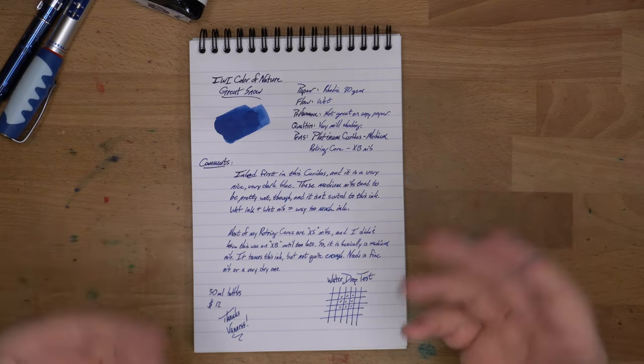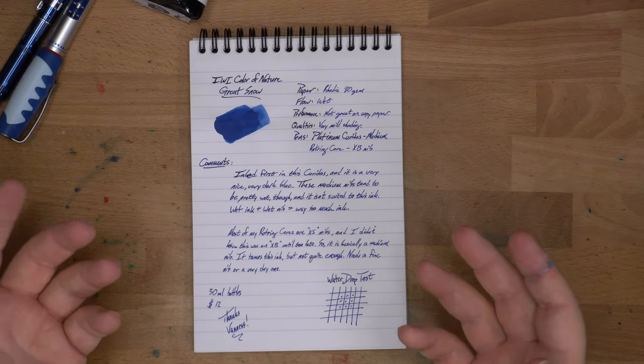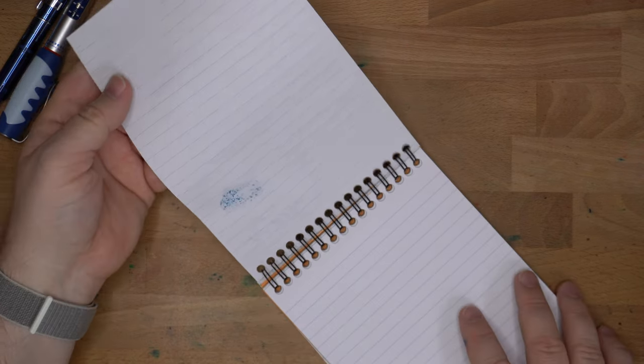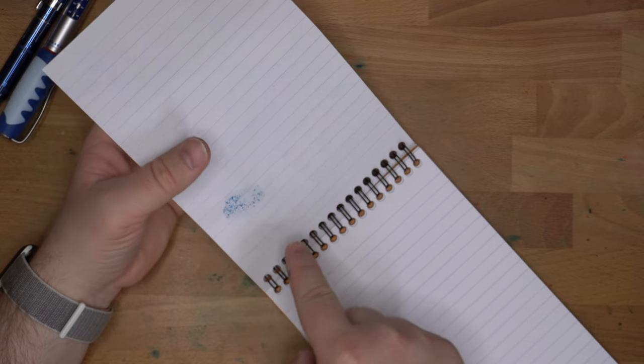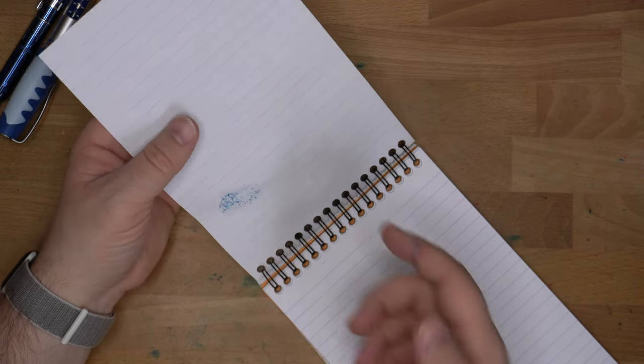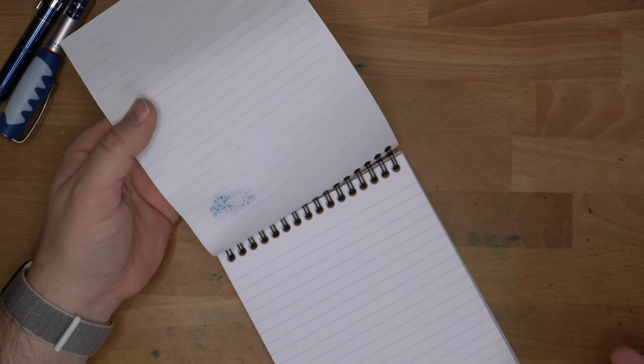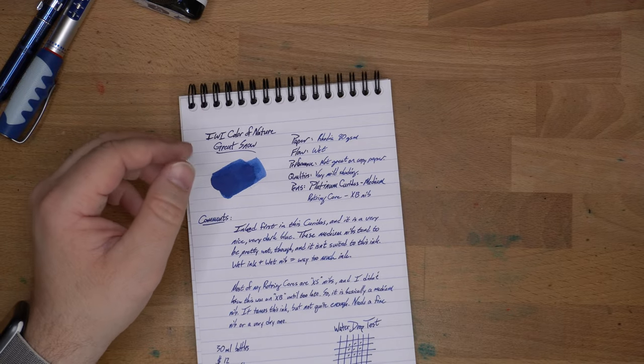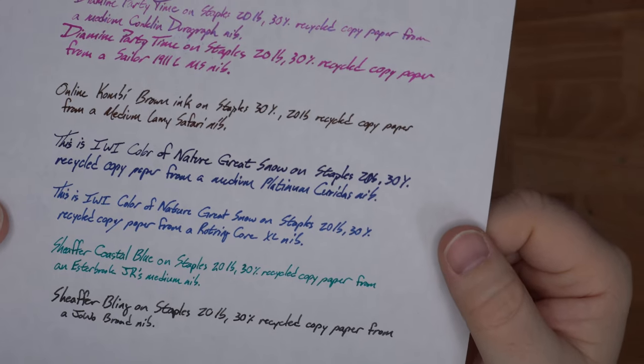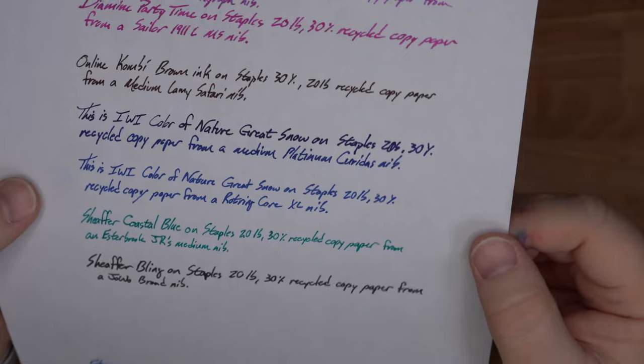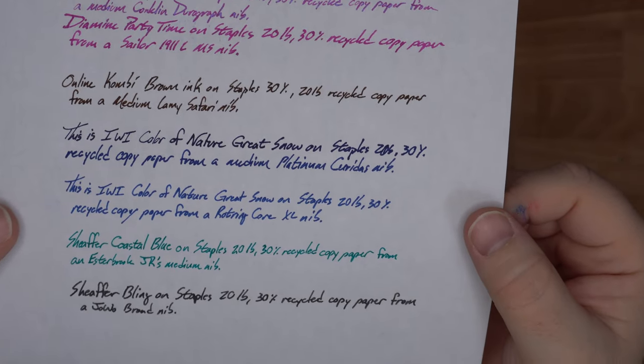Now this is another ink that really kind of depends on the paper, and you're gonna really want a good paper for this one. On this Rhodia, I didn't have any problems really. I did have some bleed-through on the swatch, but that's a lot of ink. Even so, you don't see a whole lot of that with Rhodia, so this ink is a little bit on the bleedy side. It's not great on the copy paper. This is my 20-pound, 30 percent recycled Staples copy paper. And it's not great on here. This is just not a very good paper, so it's not a huge surprise.